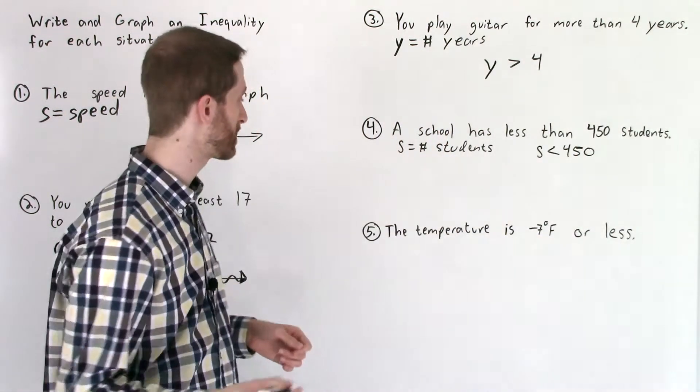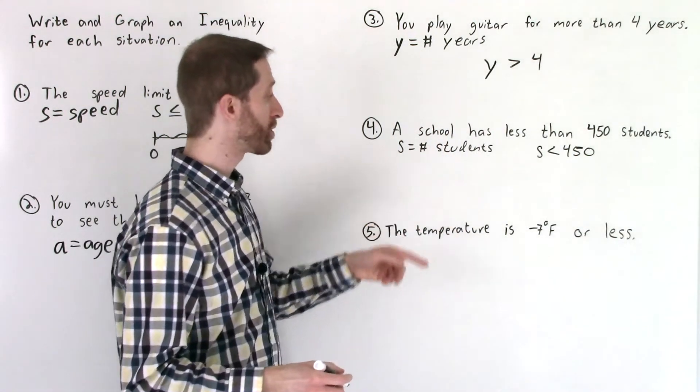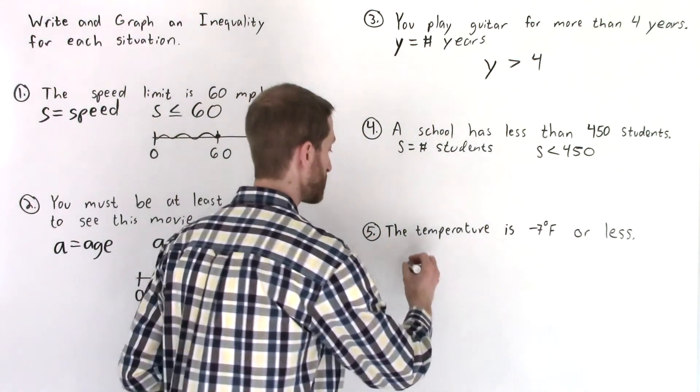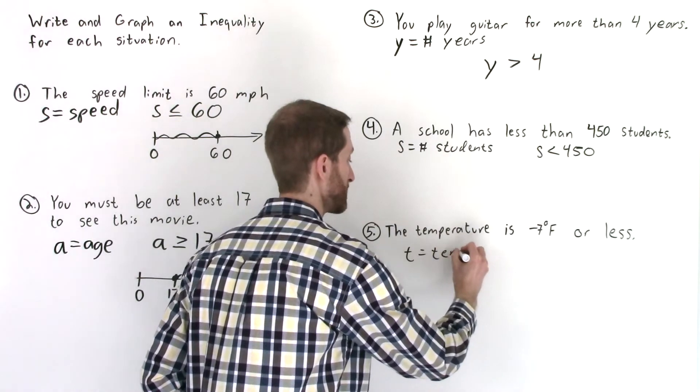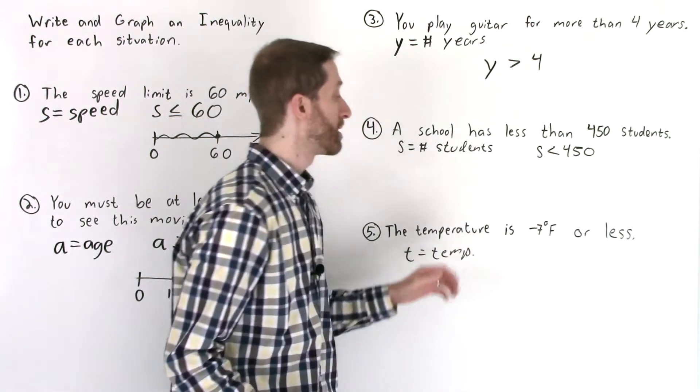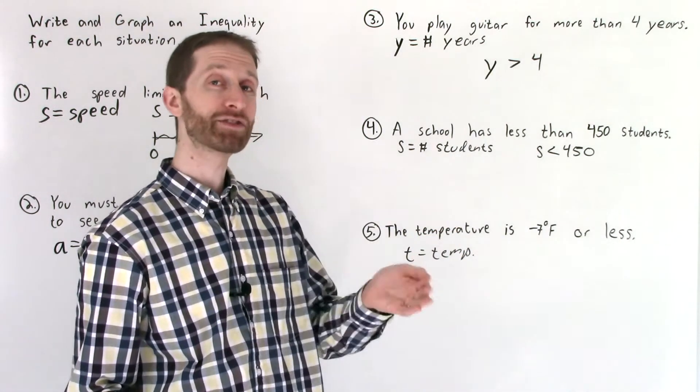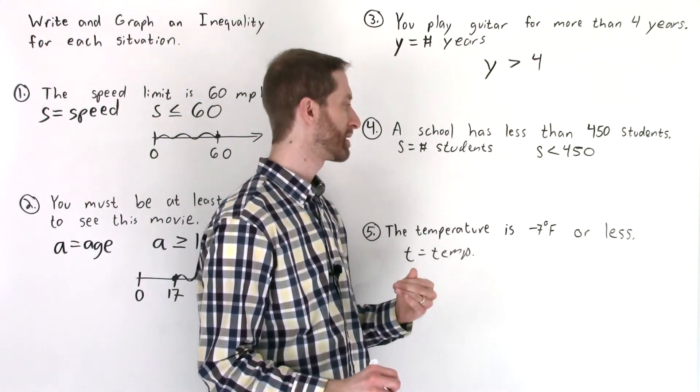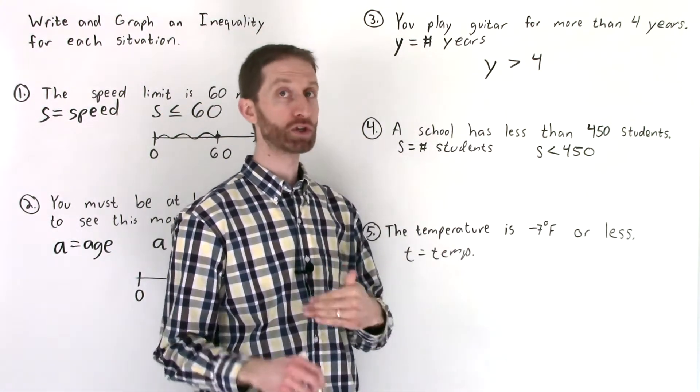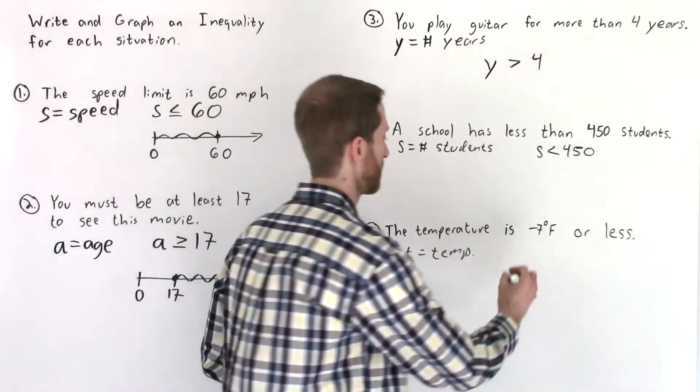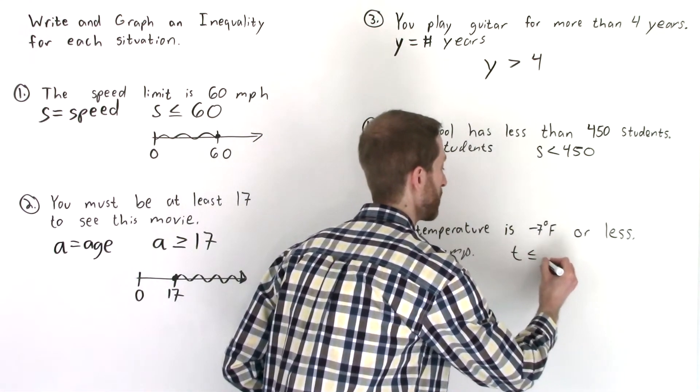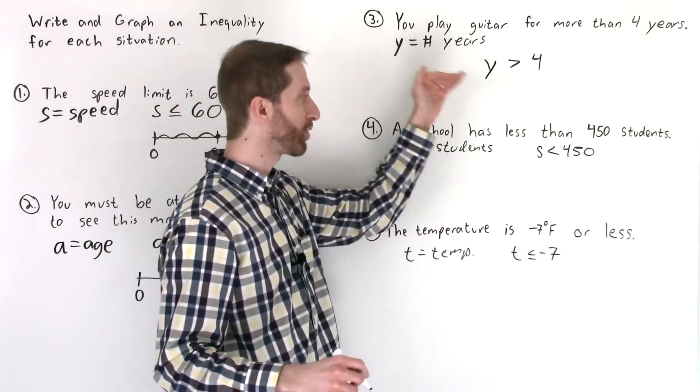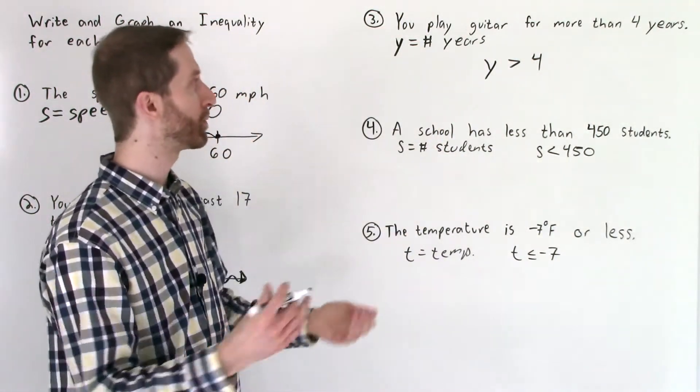Let's keep drilling these translations. Number five: the temperature is negative seven degrees Fahrenheit or less. So we're doing temperature, T equals temperature. Then we're saying that the temperature is negative seven or less. That would be like saying the temperature is less than or equal to negative seven. So T is less than or equal to negative seven. We're going to go back and graph each one of these and then we'll be done.